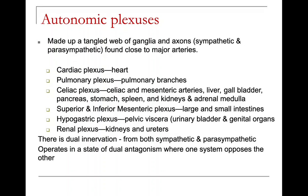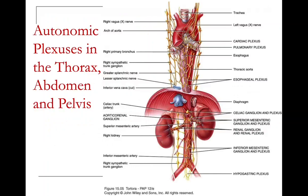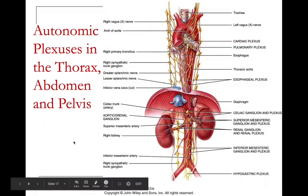There is dual innervation from both sympathetic and parasympathetic divisions. They operate in dual antagonism — one system opposes the other. You cannot be in rest-and-digest and fight-or-flight mode simultaneously. A diagram shows all of these different autonomic plexuses.